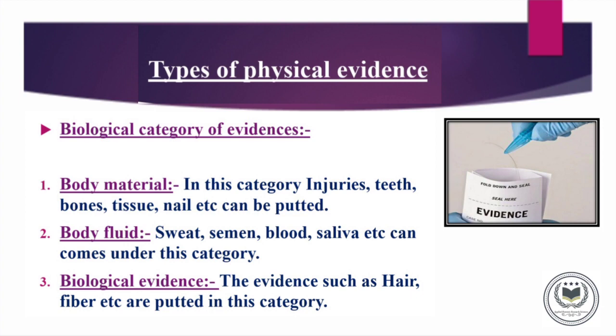Another category is Biological Evidence, which includes: first, Body Material; second, Body Fluid; and third, Biological Evidences. In Body Material, there can be many things such as Injuries, Teeth, Bone, Tissue, Nail, etc. In Body Fluid category, fluids like Blood, Semen, Saliva, etc. can be included. Biological Evidences such as Hair and Fiber can also be included. We can recognize this as Biology which is directly related with a Living Body.